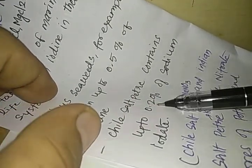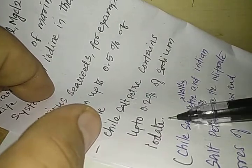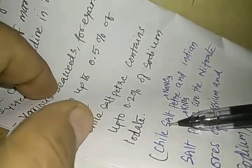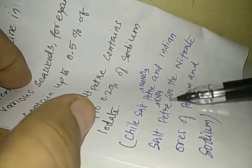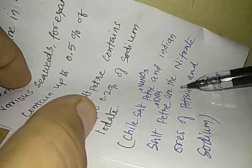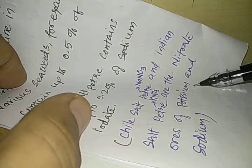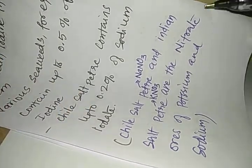Chile salt peter contains up to 0.2% of sodium iodate. Please remember, Chile salt peter which is NaNO3 and Indian salt peter which is KNO3 are the nitrate ores of potassium and sodium.